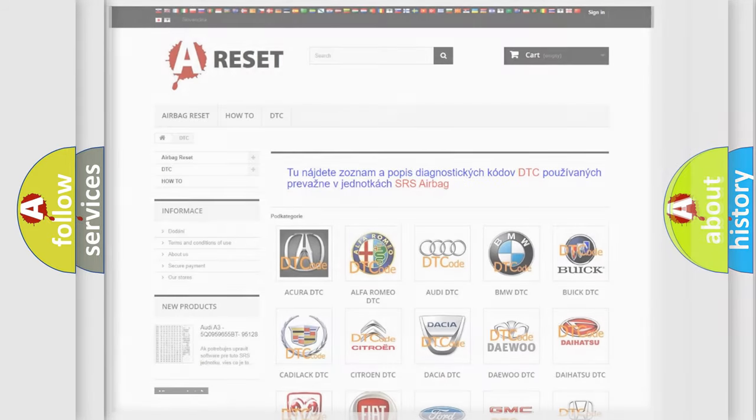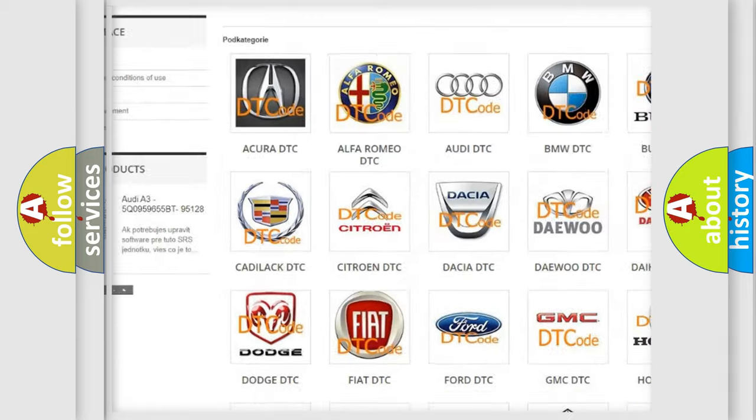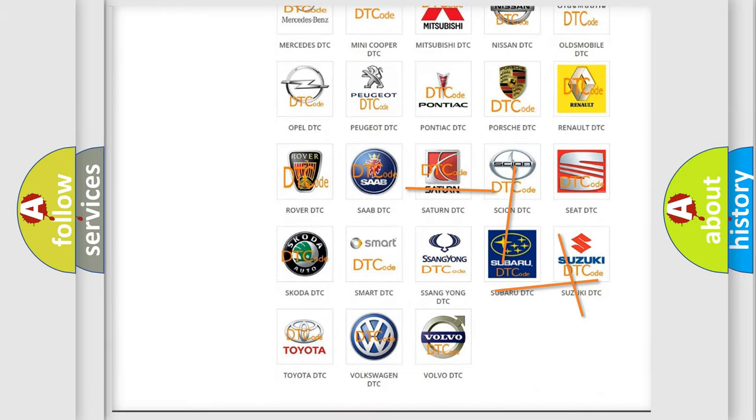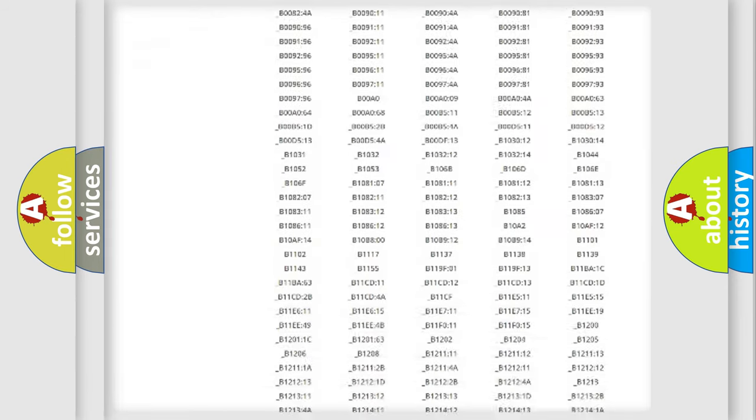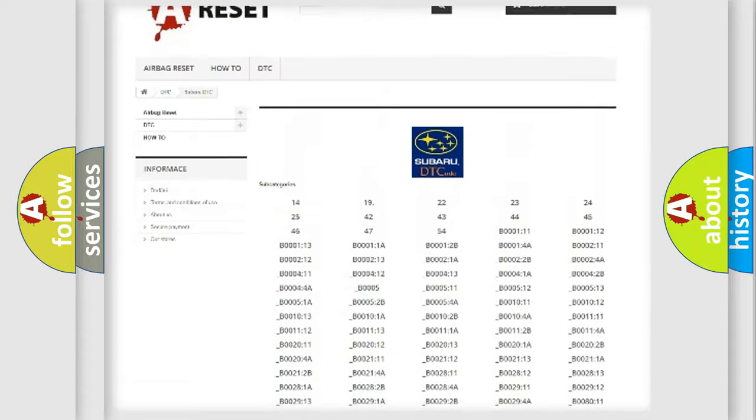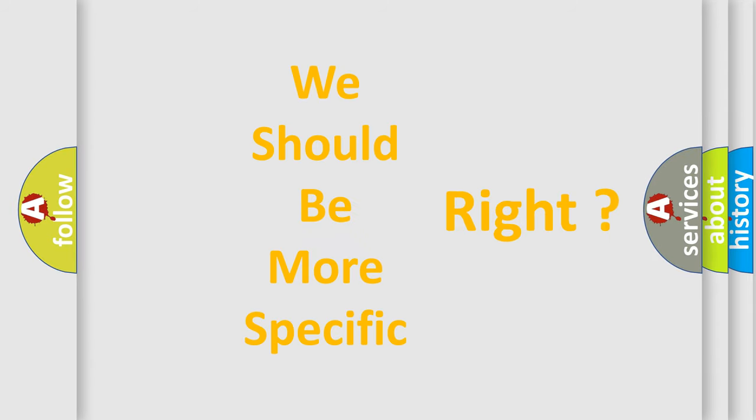Our website airbagreset.sk produces useful videos for you. You do not have to go through the OBD2 protocol anymore to know how to troubleshoot any car breakdown. You will find all the diagnostic codes for Subaru vehicles and many other useful things. The following demonstration will help you look into the world of software for car control units.